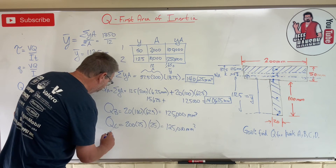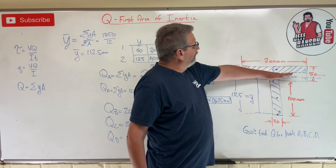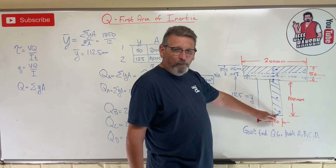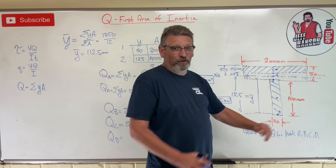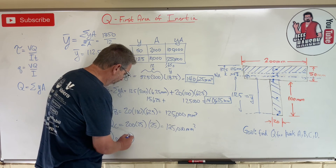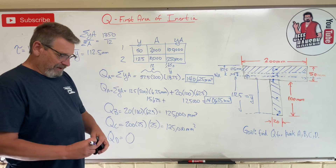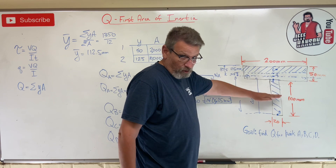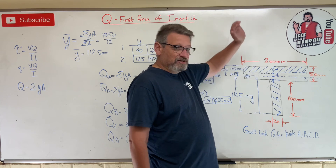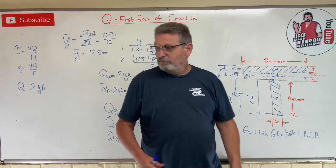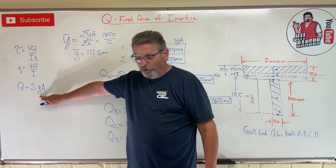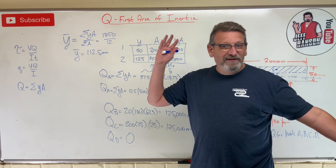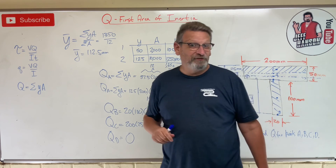Finally, Q for point D: it's way down at the bottom. Point D is below the neutral axis, so we look at the area below point D — but it's on the outside of the part, so there's no area below it. Therefore Q at point D equals zero. To summarize: Q is the area above or below the point of interest, and y-bar is always measured from the neutral axis to the centroid of that area. Hope that makes Q easy to calculate and the rest of this chapter a breeze!